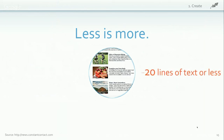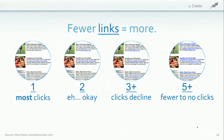A best practice is to limit yourself to 20 lines of text and three or fewer images. Our research shows that one link gets the absolute best click-through rate — you want your audience to take an action, so use that link to make it clear. Two links are okay, but once you get to three, click-through rate starts to decline. Anything higher than five links means people are less likely to click anywhere — they'll just get overwhelmed. Stick with one or two clicks and keep them high in your message.